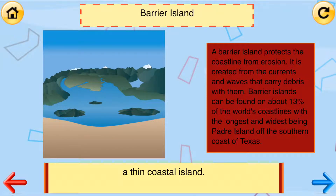Barrier Island: A thin coastal island. A barrier island protects the coastline from erosion. It is created from the currents and waves that carry debris with them. Barrier islands can be found on about 13% of the world's coastlines, with the longest and widest being Padre Island off the southern coast of Texas.